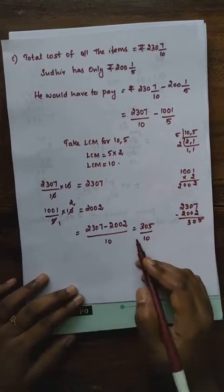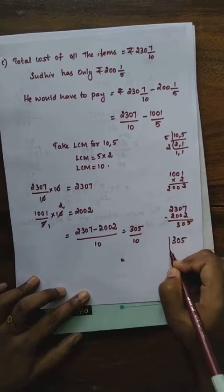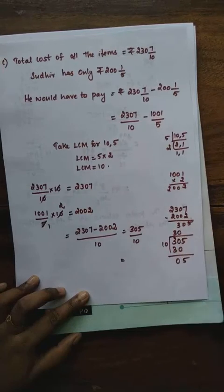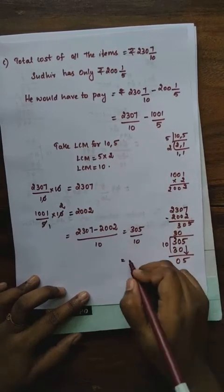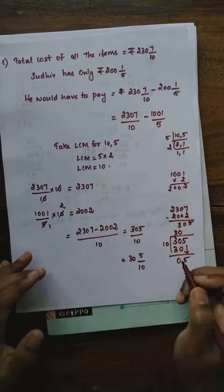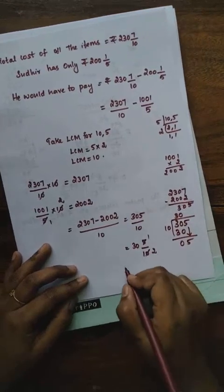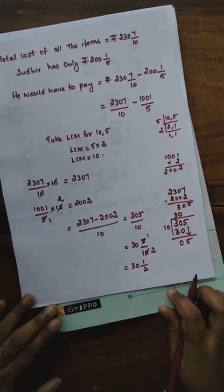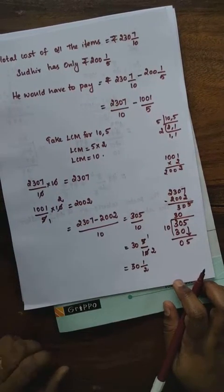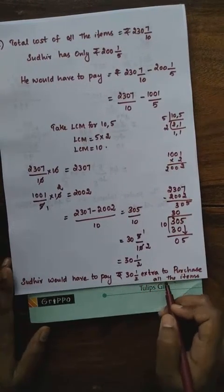We need to convert 305/10 into a mixed fraction. Dividing 305 by 10: 10 goes 30 times with remainder 5. So the mixed fraction is 30 and 5/10. We can simplify 5/10 by cancelling in 5 table: 5/10 = 1/2. So the final answer is 30 and 1/2. Thus Sudhir would have to pay rupees 30 and 1/2 extra to purchase all the items.